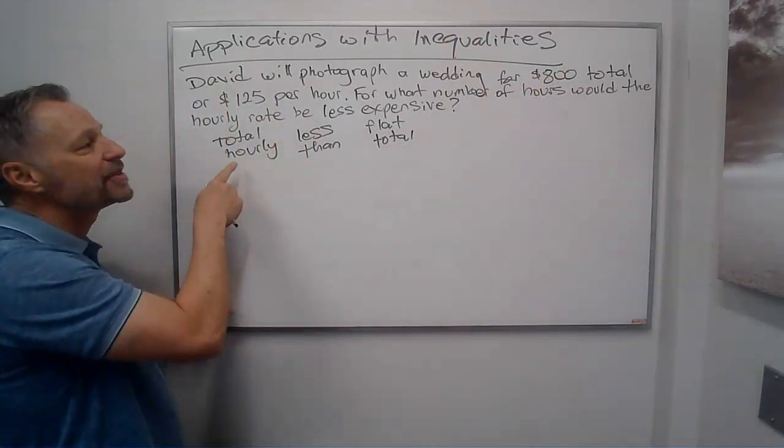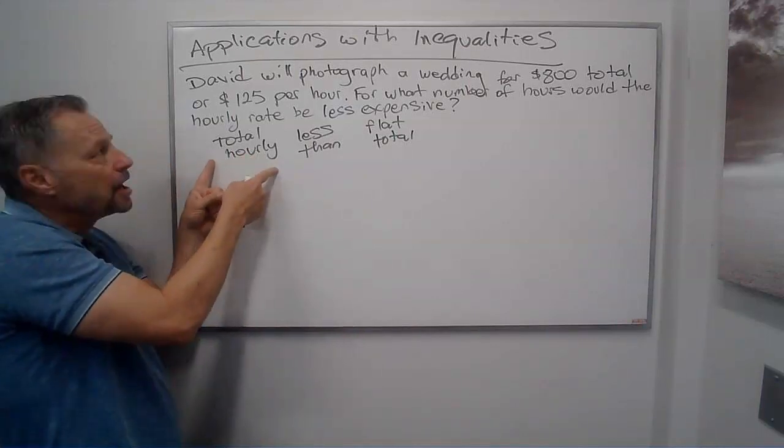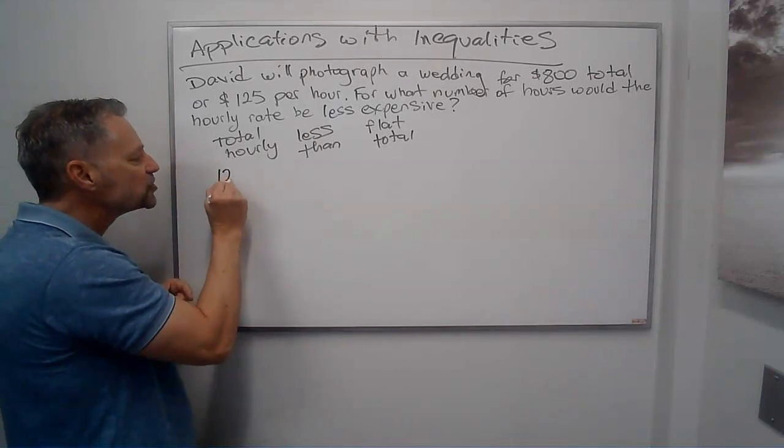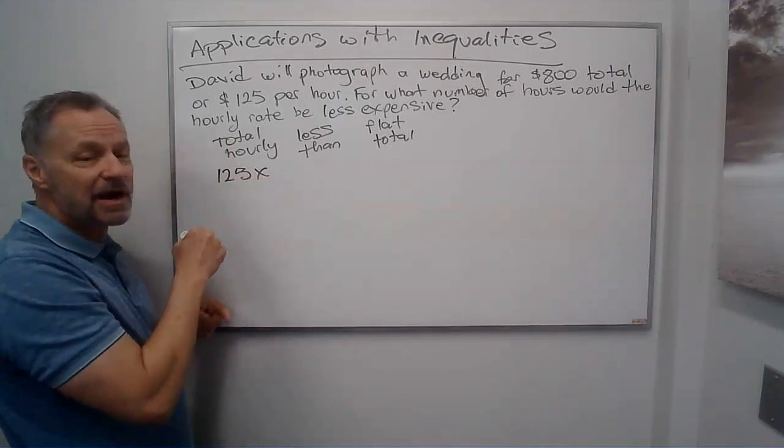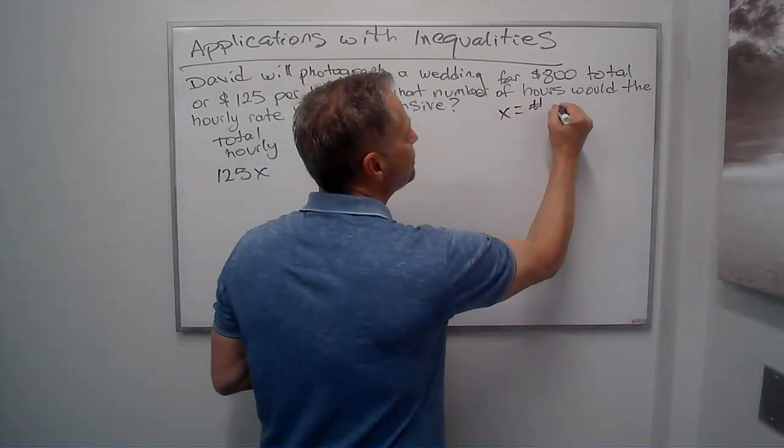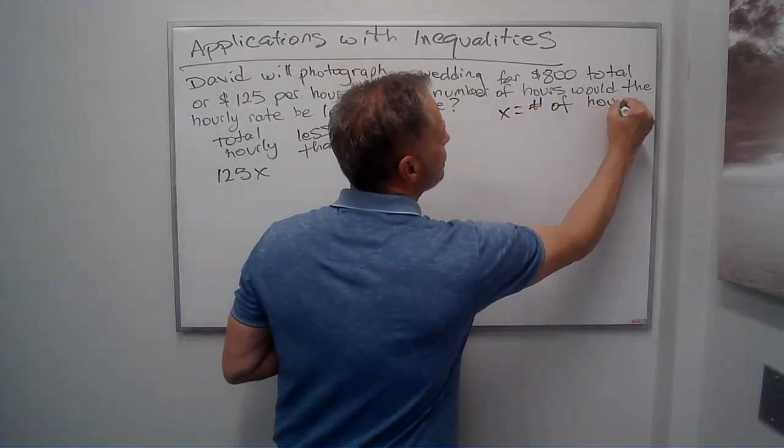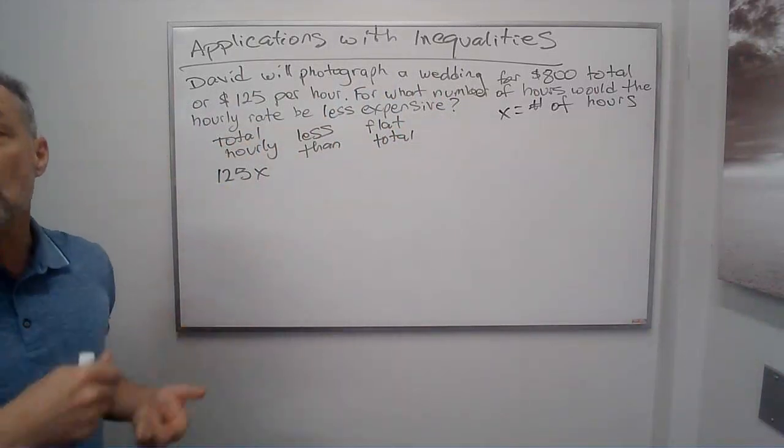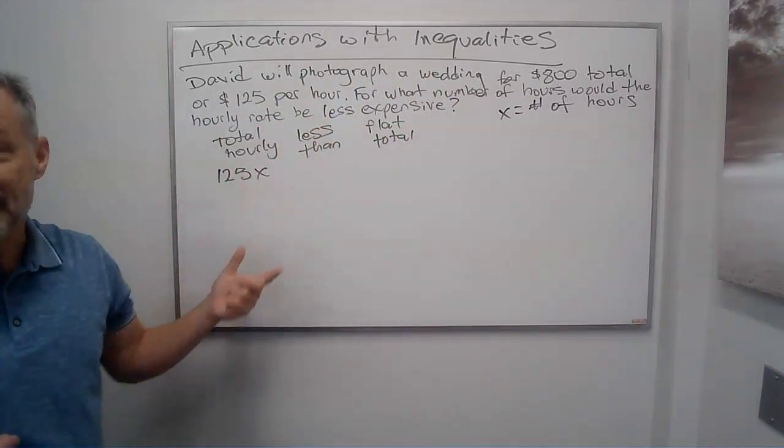So what I have here, the hourly total, let's think about what makes this up. It's $125 per hour, so it's going to be $125 times however many hours I'm doing. So I'm saying X is number of hours. Don't be afraid to label your variable so that when you solve it, you know what it means and if you've actually answered the question.